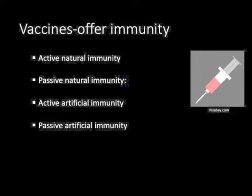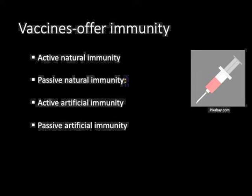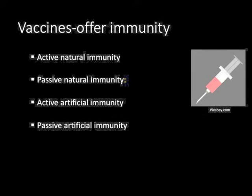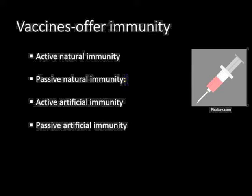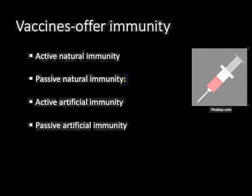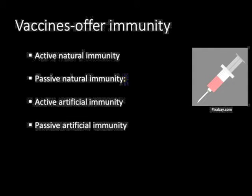There are four types of immunity. With active natural immunity, microbes invade our body and our body fights it. An example of this is when an individual gets chicken pox — the infection runs its course, and an immunity is now in place for future exposure.